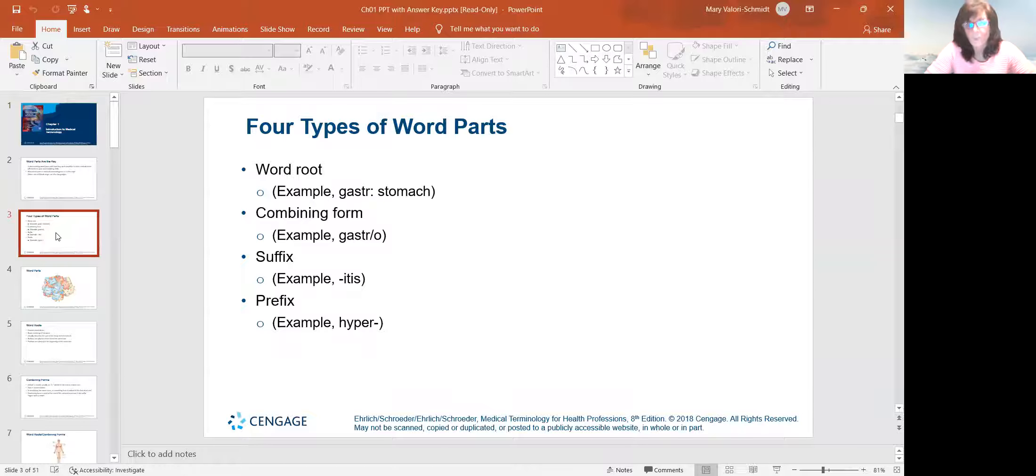There are four types of word parts. The word root is really what is the word talking about. So gastro, G-A-S-T-R, pertains to your stomach. But then there's a combining form of the word. So the example would be gastro.